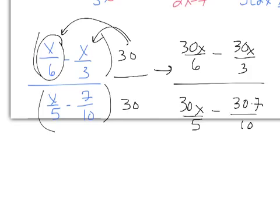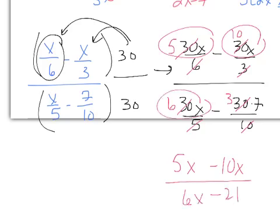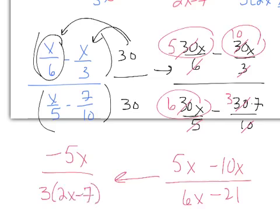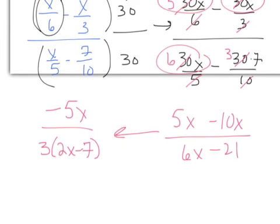Everything cancels or reduces: 30x over 6 becomes 5x, 30x over 3 becomes 10x, 30x over 5 becomes 6x, and 30 times 7 over 10 becomes 21. So we have 5x minus 10x up top, all over 6x minus 21. Continuing to reduce: the numerator becomes negative 5x, and factoring a 3 from the denominator gives 3 times the quantity 2x minus 7. This is the exact same answer as Method 1: negative 5x over 3 times the quantity 2x minus 7.